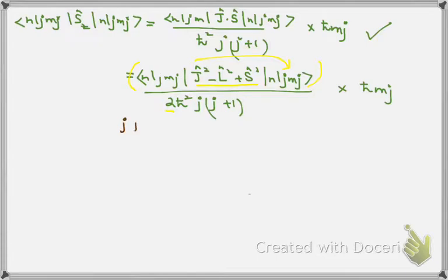We have J(J+1) when J² acts on this eigenstate. We have -L(L+1) for L², and +S(S+1) for S². All these terms include ℏ².